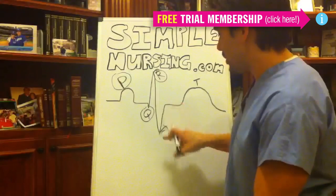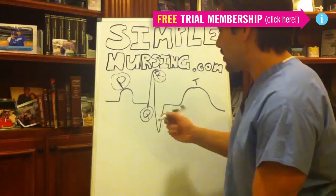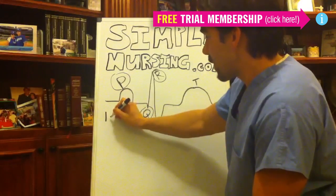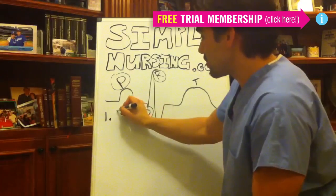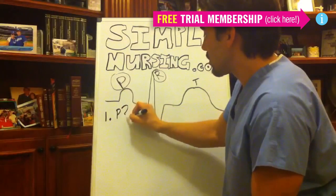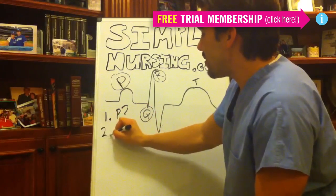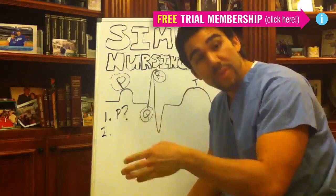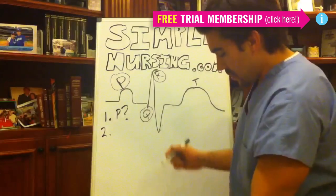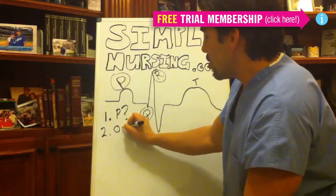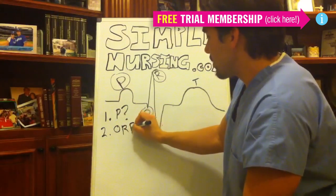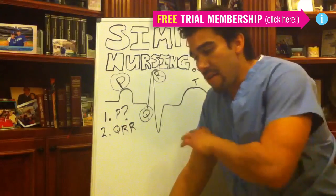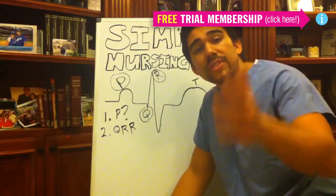Your first step in our five-step system is: are there any P waves? Can you identify a P wave? If so, yes — you're moving on to step number two. Step number two: are there any QRS complexes in the EKG? Is there a QRS? Are the ventricles depolarizing?